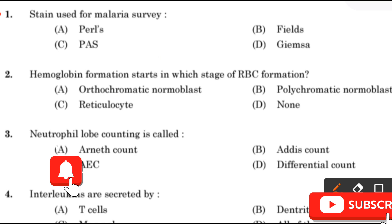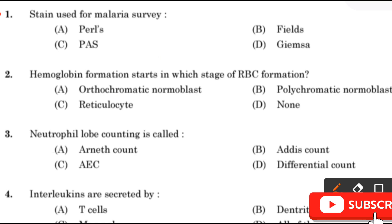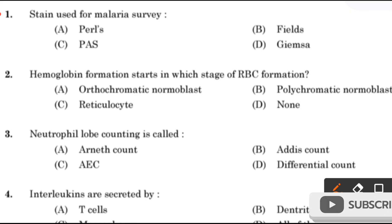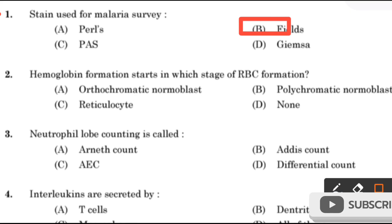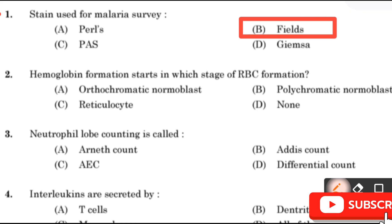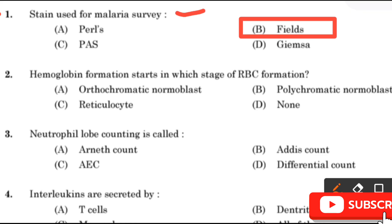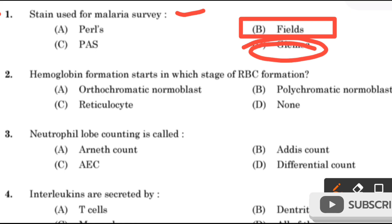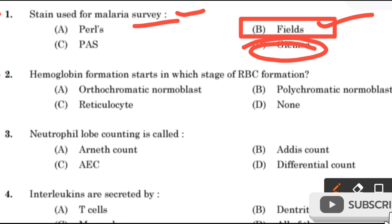Question number 1: Stain used for malaria survey — Pulse stain, Field stain, PAS (Periodic Acid Schiff) stain, or Giemsa stain? The right answer is Field stain. For malaria detection we can use Giemsa stain, but for survey we use Field stain.